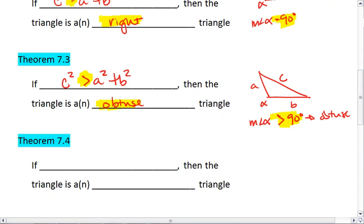Lastly, and you've probably guessed this already, we get c squared is less than a squared plus b squared. This tells us that our triangle is actually an acute triangle.